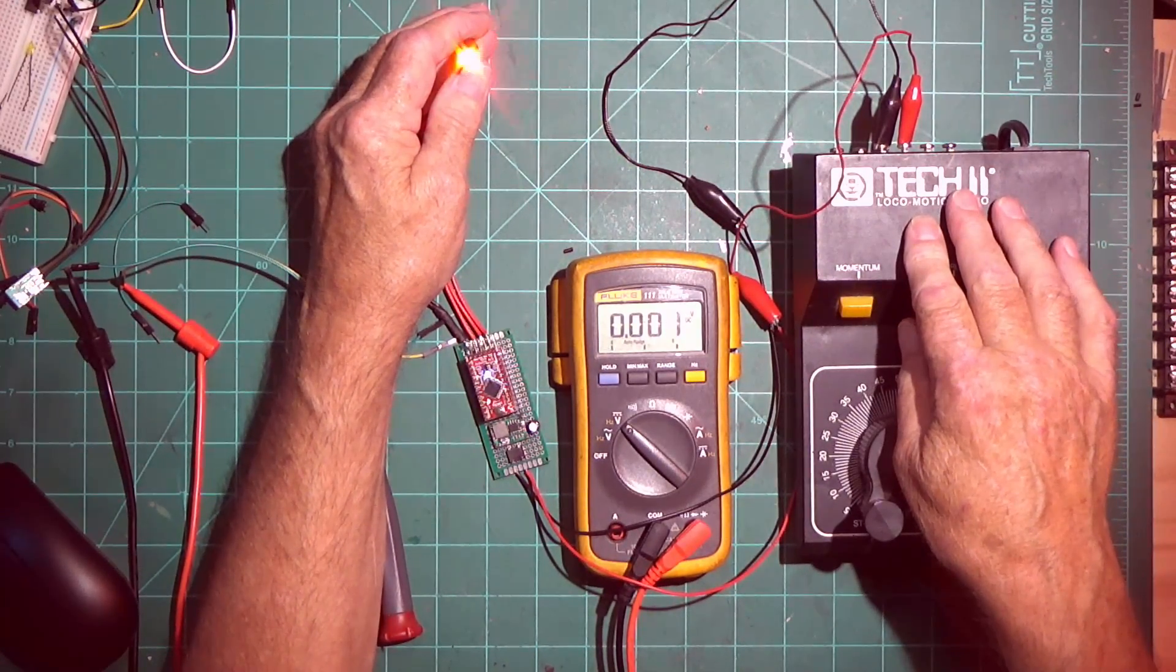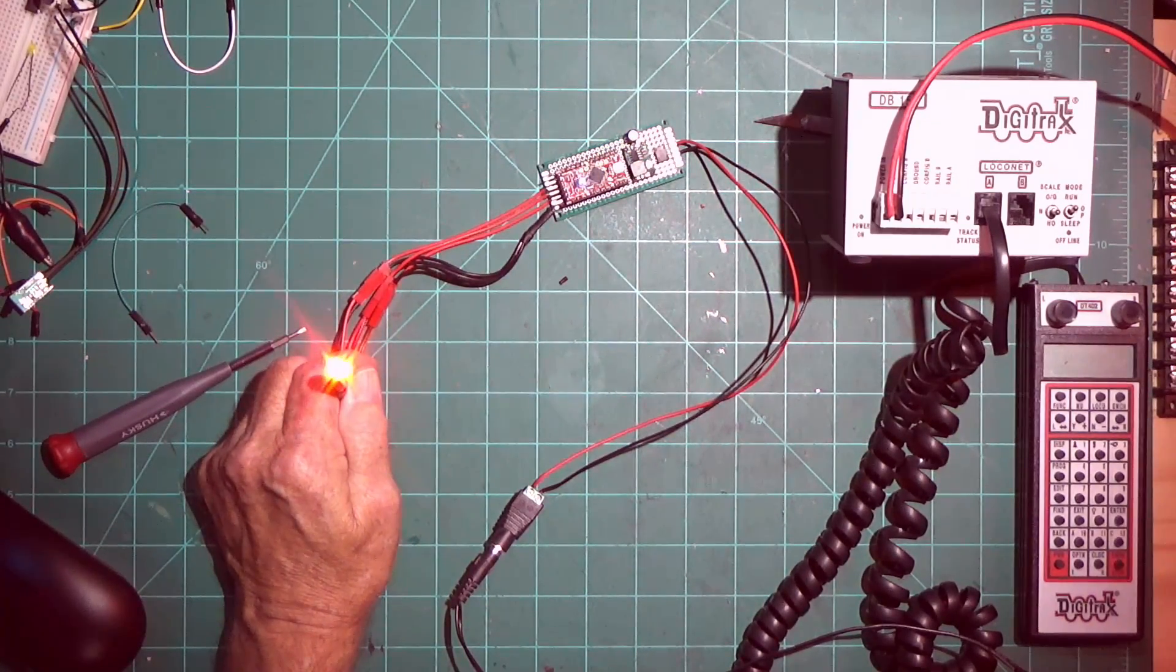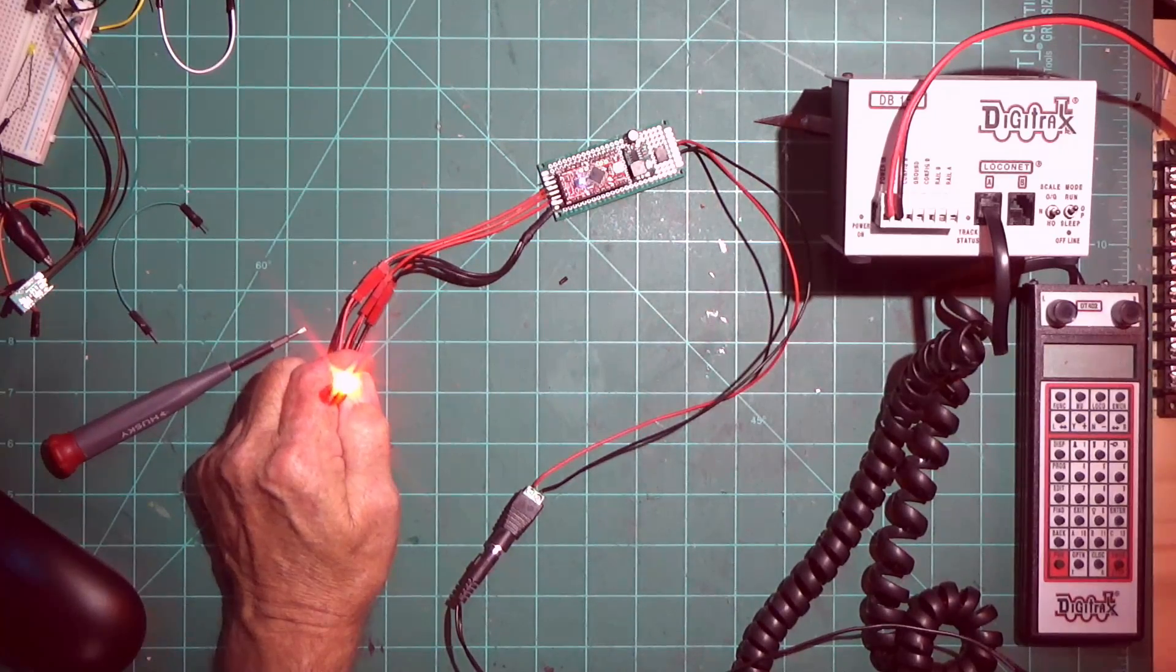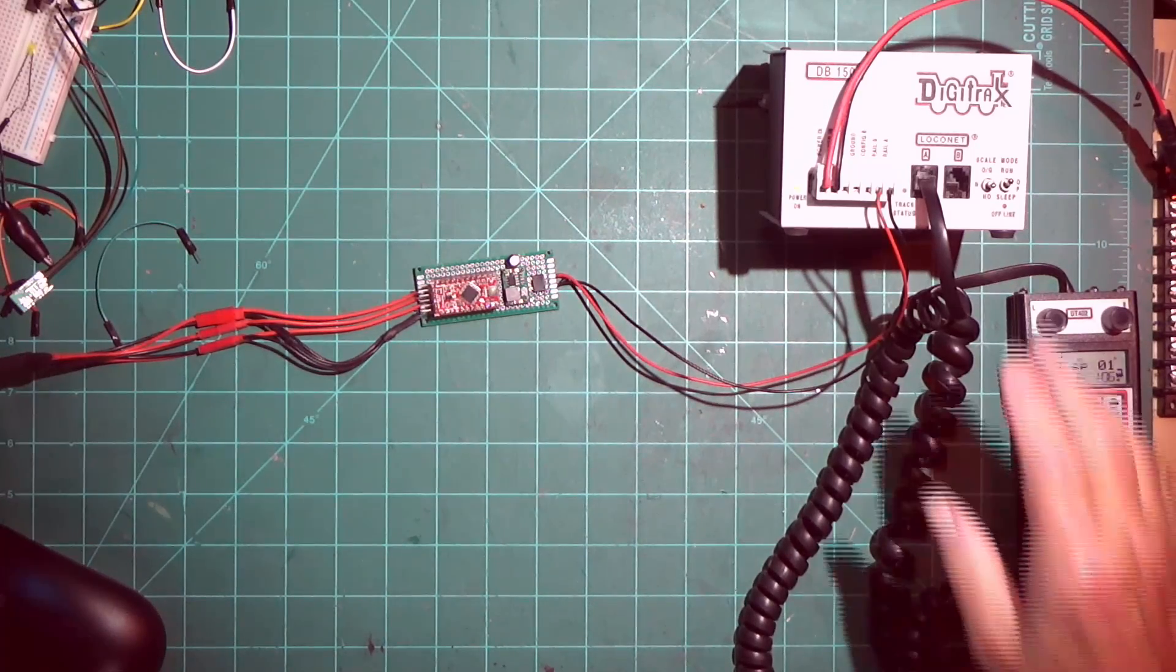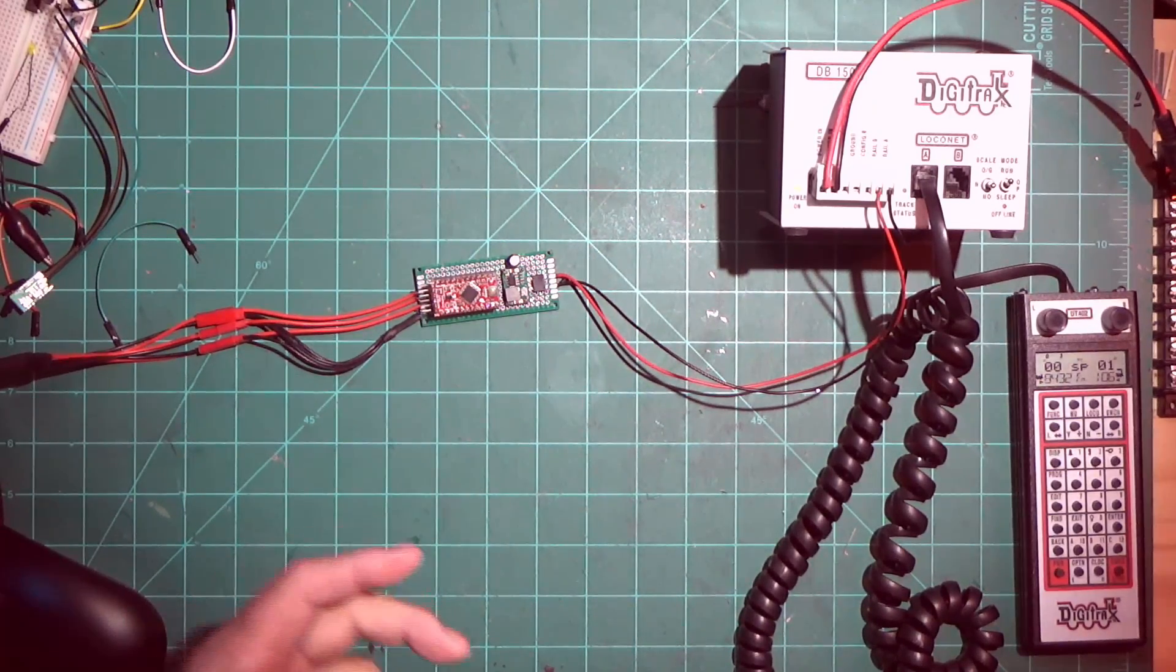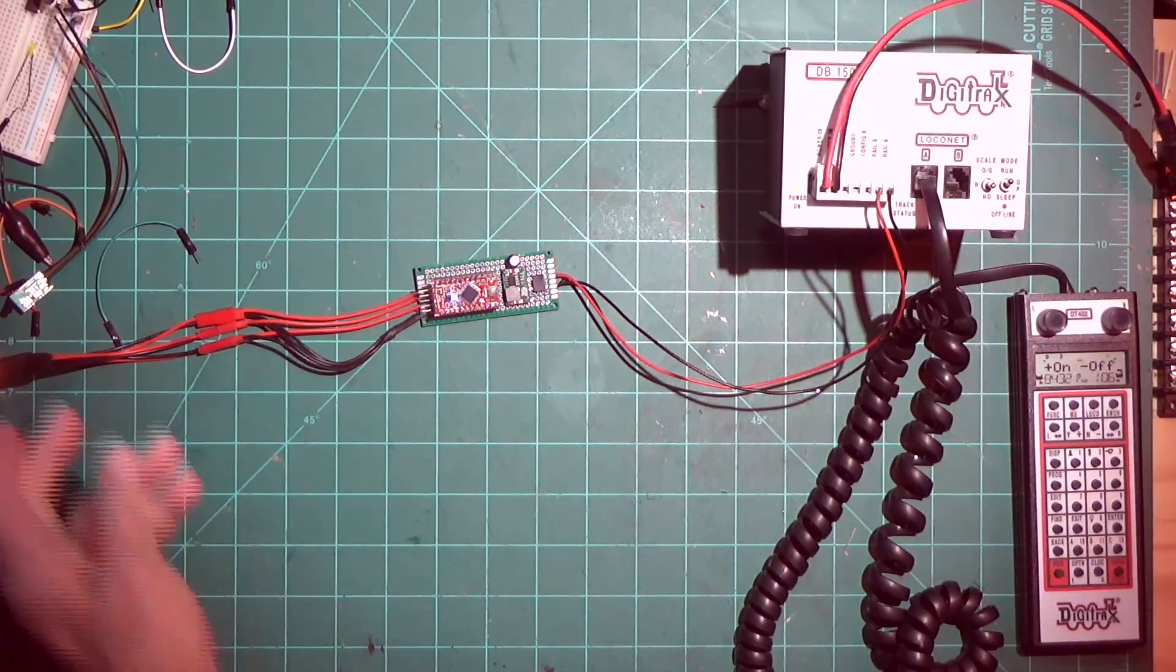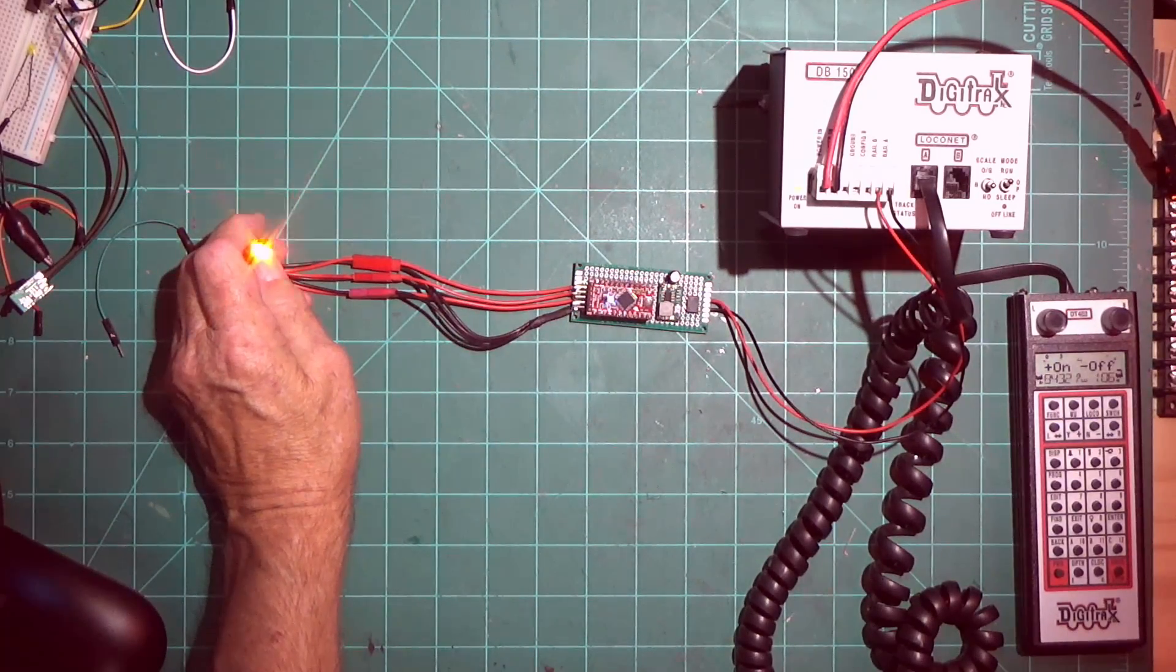Right now I have it hooked up to the wall wart. Apply the power and there you go, there's your campfire simulation for your Arduino. Now we have it hooked up to the command station. You don't have to hook it directly up to your command station, you could run it off your feeders, off your track power underneath your layout. There you go, there's the track power and there's your sketch running.